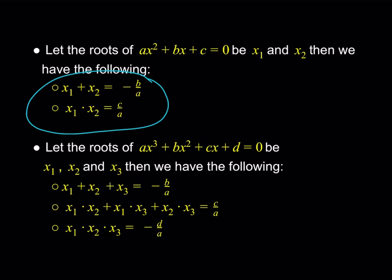For example, when we get the equation of a circle and one of the solutions is going to be negative, I can tell by looking at the product and the sum. So these are very helpful formulas. For any degree polynomial equation, the sum of the roots is always going to be negative b over a. With the product, we get c over a, then negative d over a — it alternates, but always starts with negative b over a.